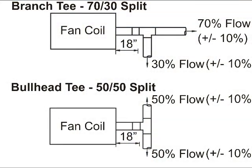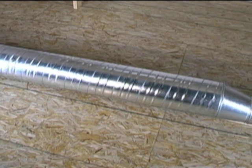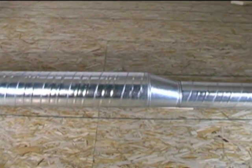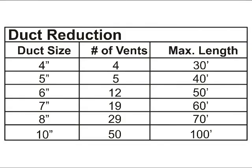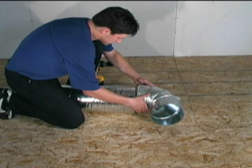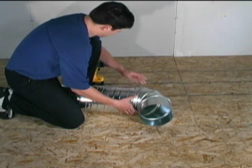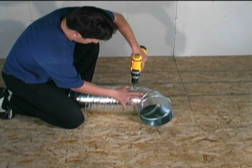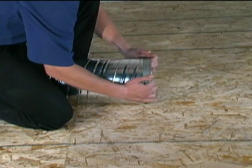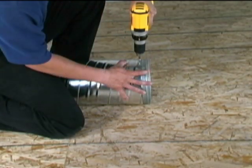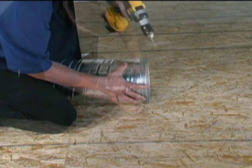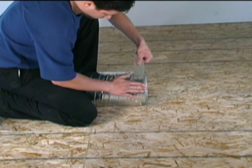For details on airflow requirements for branch or bullhead T connections, refer to the installation guide. When it is necessary to reduce the size of the main plenum, care must be taken in selecting the right number of branch outlets relative to duct size. The installation guide provides complete plenum sizing and selection tables. Typically, the main supply plenum is assembled on the floor before being suspended in place. Insert the elbow, T, or end cap into the main supply plenum and ensure a tight fit. Secure the connection using four sheet metal screws. Seal all joints to ensure an airtight connection.